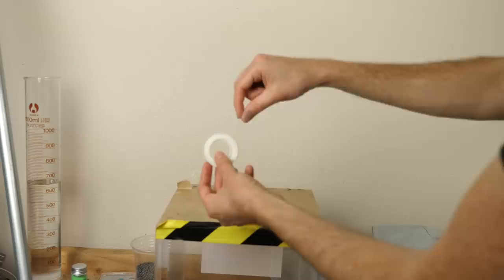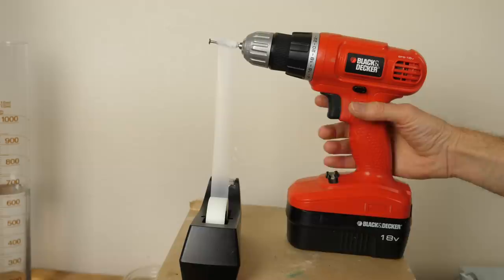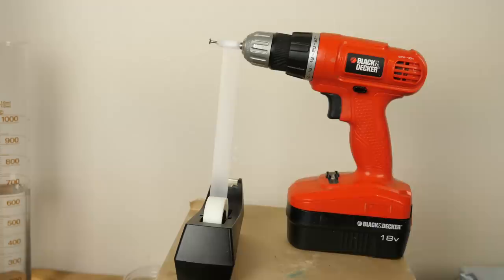So watch what happens when I unravel this scotch tape in the dark. So I'm going to unravel this tape in the dark and you should be able to see some bright light coming from the center right where it's unraveling. So I'll turn on my drill in the dark and let's see if we can see it.